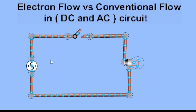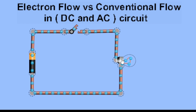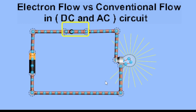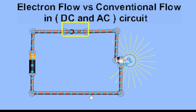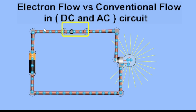Let's discuss first the electron flow in DC. In DC, if we close the switch and turn it on, you can see the current flow. In electron flow, current is considered to be the movement of electrons — the negatively charged particles — moving from the negative terminal of the battery to the positive terminal. So that is negative to positive: that is the electron flow in a DC circuit.